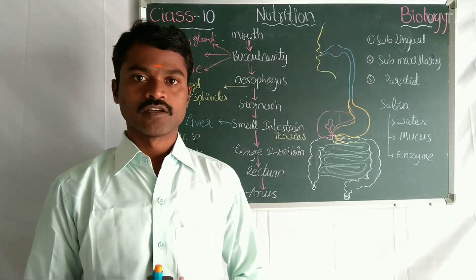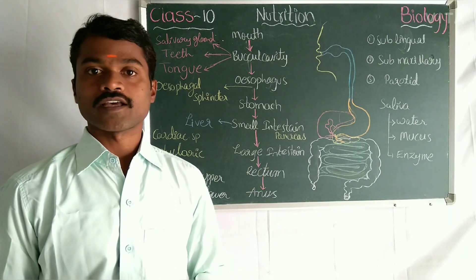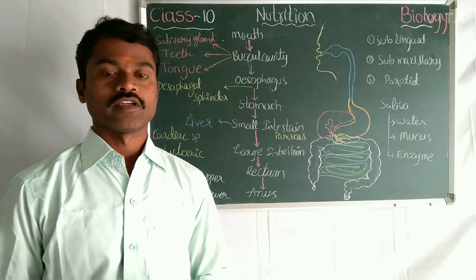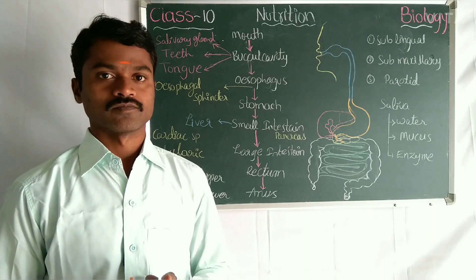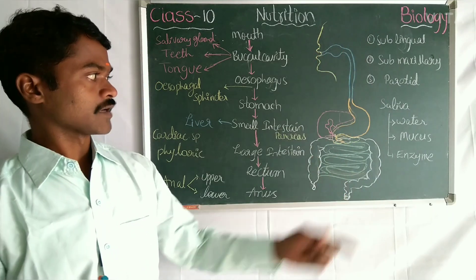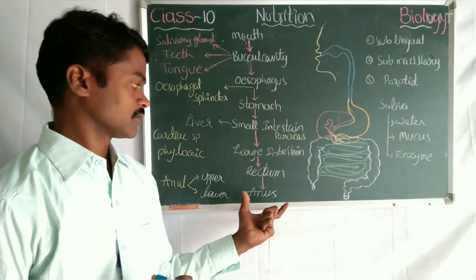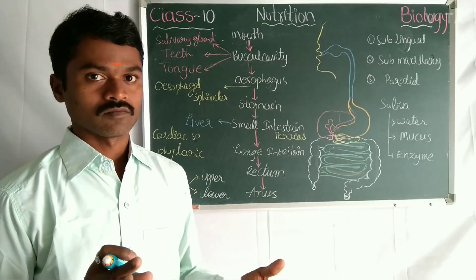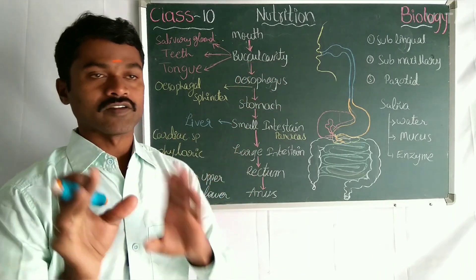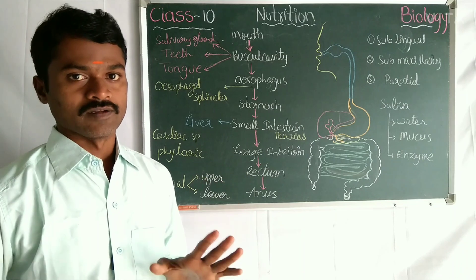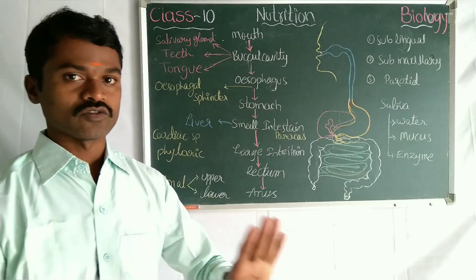Good morning boys and girls. Continuing from the last class on holozoic nutrition, in our syllabus we have the human digestive system. This is a diagram and a flowchart for the human digestive system. Please note this flowchart in your notebook — you already have it in the textbook but in a different way. This one is also very simple with complete details.